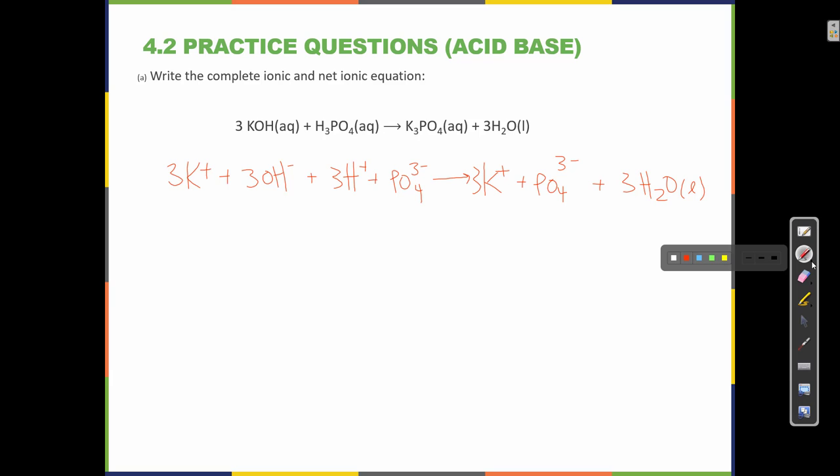To turn a complete ionic equation into a net ionic equation, I have to locate the spectator ions. K+ is the same on both sides. Phosphate is the same on both sides. A trick to locate the spectators is to locate the aqueous species on the product side that contains both spectators: K+ and PO4.